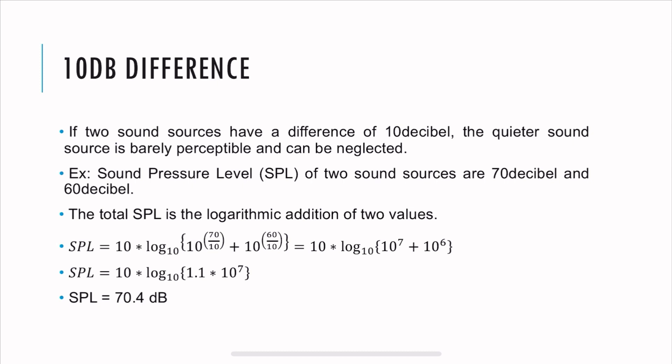There's the infamous 10 dB difference: if you have two sound sources with a difference of 10 dB or more, the quieter sound is as good as non-existent. Let's say you have two sound sources at 70 dB and 60 dB. If you add them logarithmically, you get 70.4 dB — setting A-weighting aside and just focusing on the logarithmic addition.